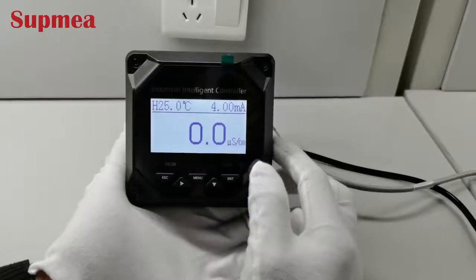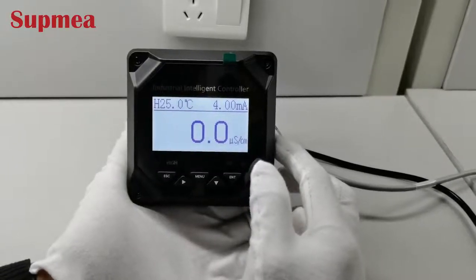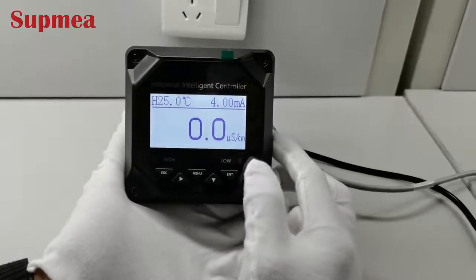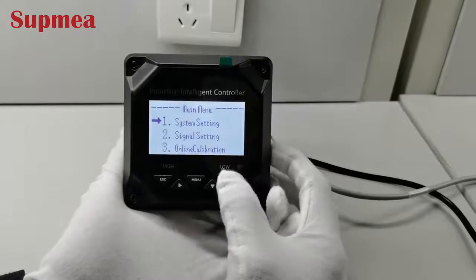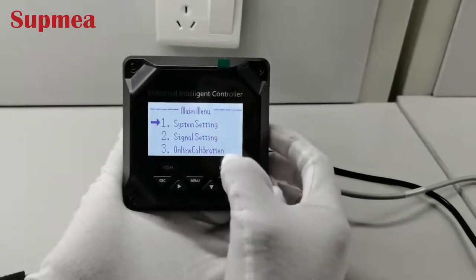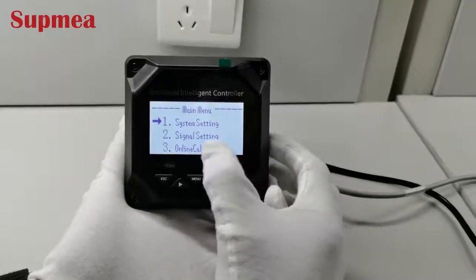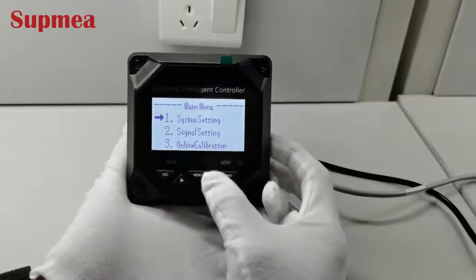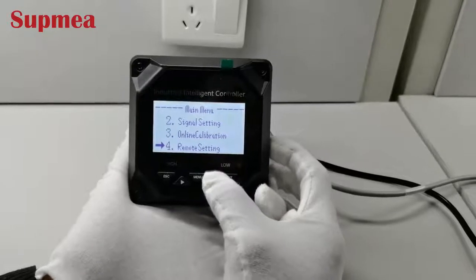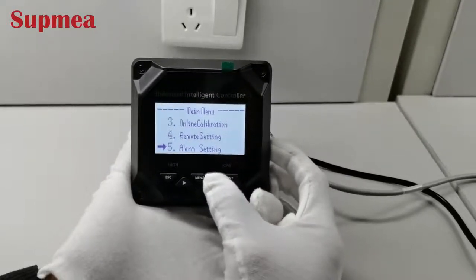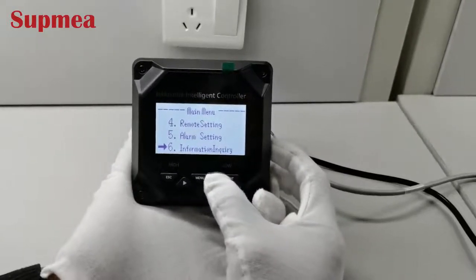Let's see what are the configurations of the controller. First, press menu, and then enter. Here are the list of the configurations of the controller: system settings, signal settings, online calibration, remote setting, alarm setting, and information inquiry.